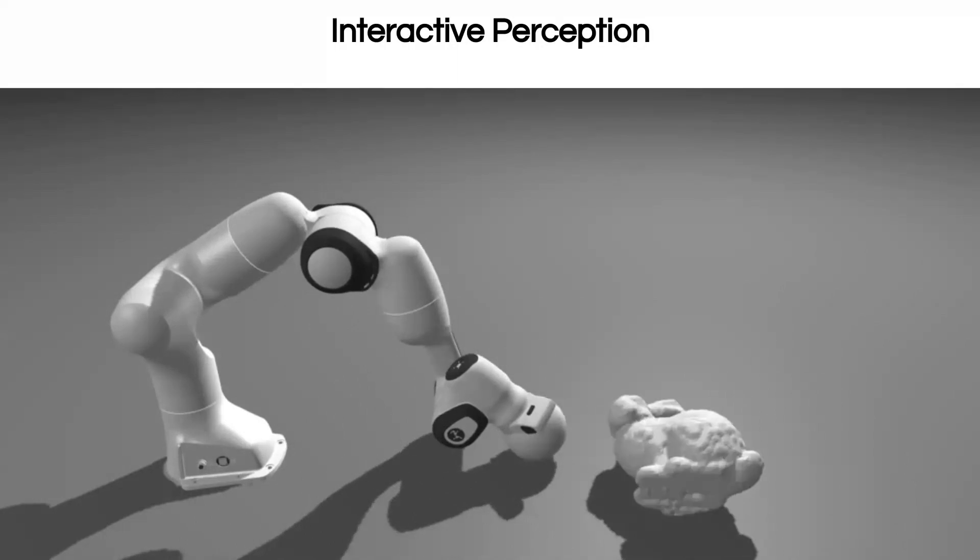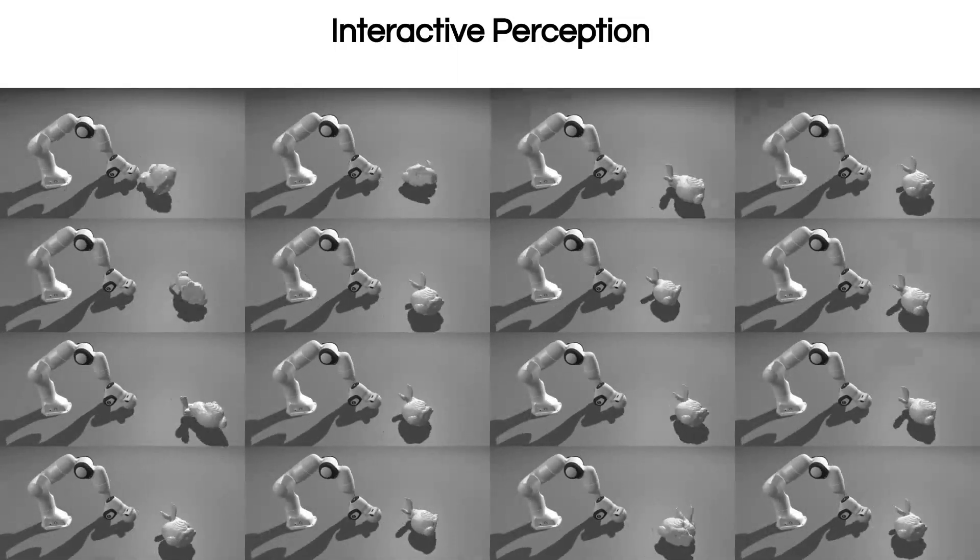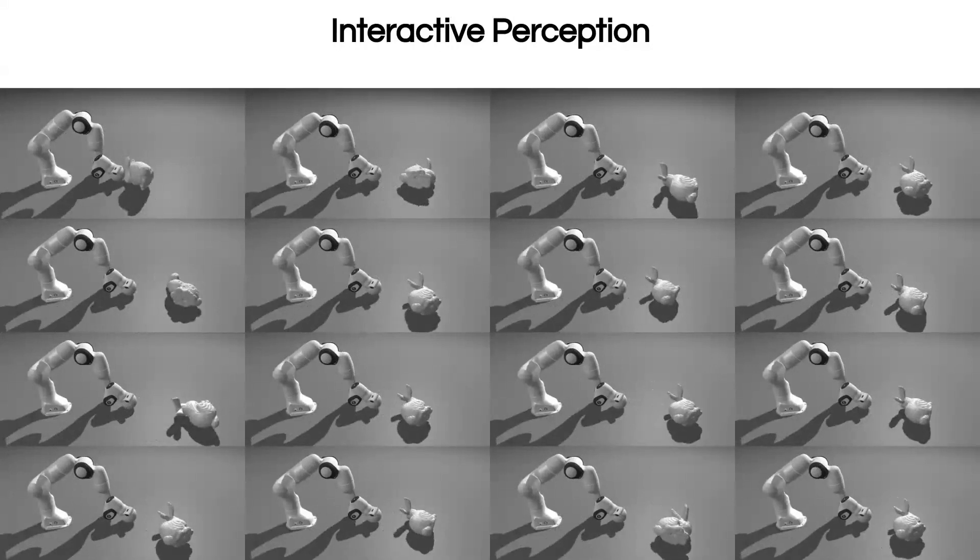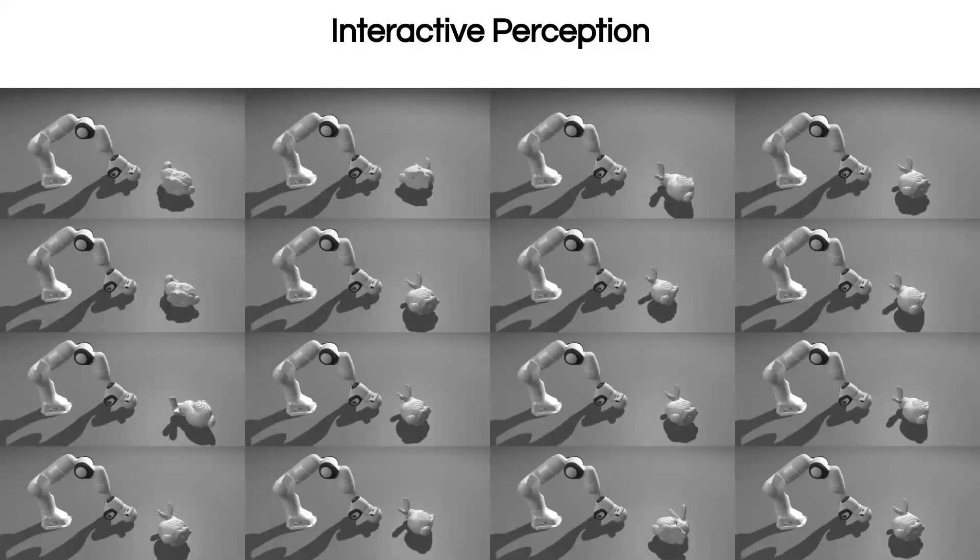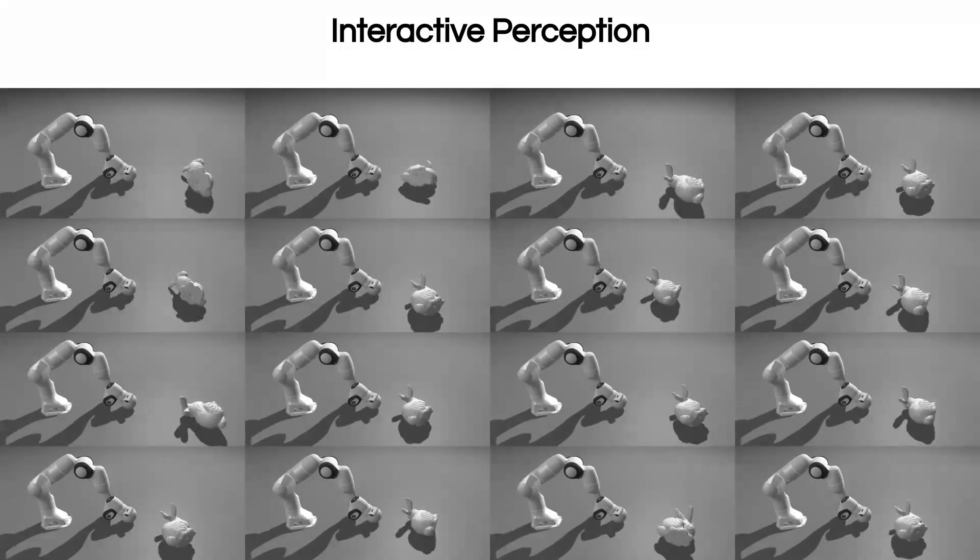This experiment is done in simulation. In simulation, we generate a dataset of trajectories where the robotic arm and the neural object are interacting. Then, we identify the dynamics parameters of the bunny by minimizing a trajectory prediction loss.